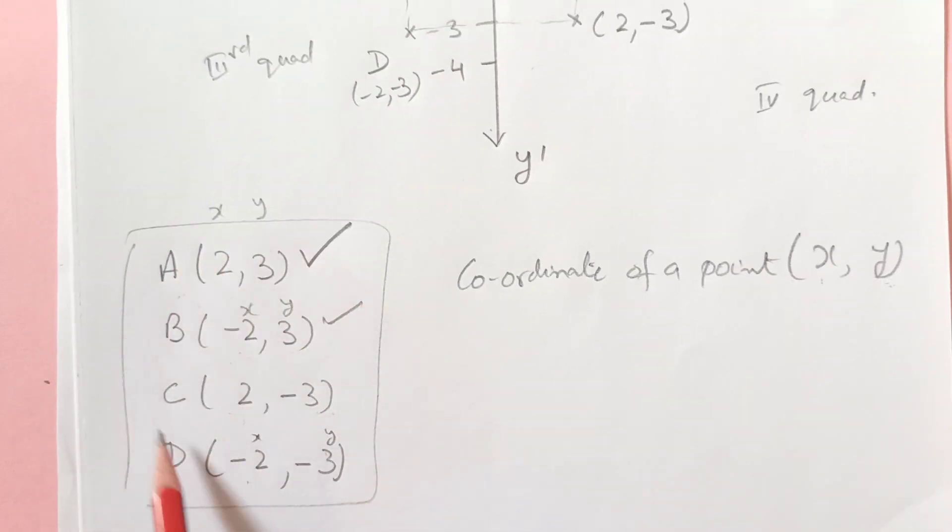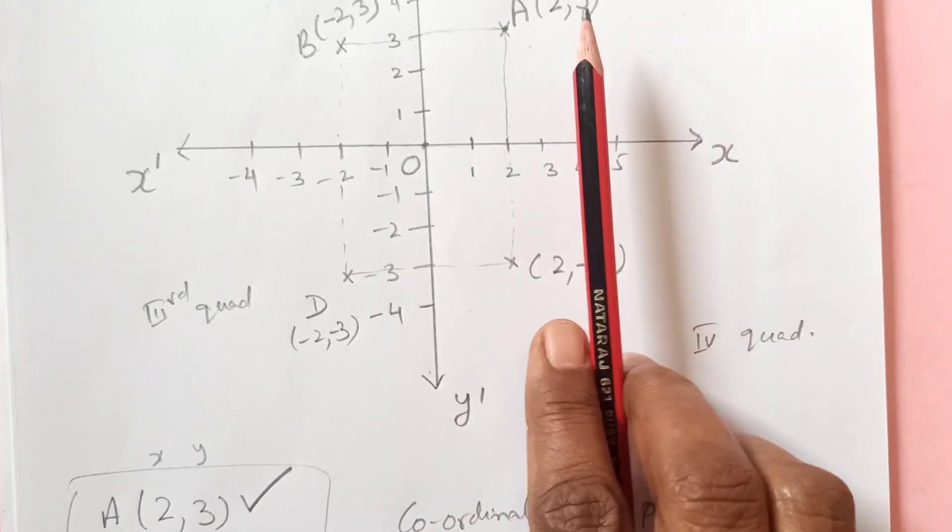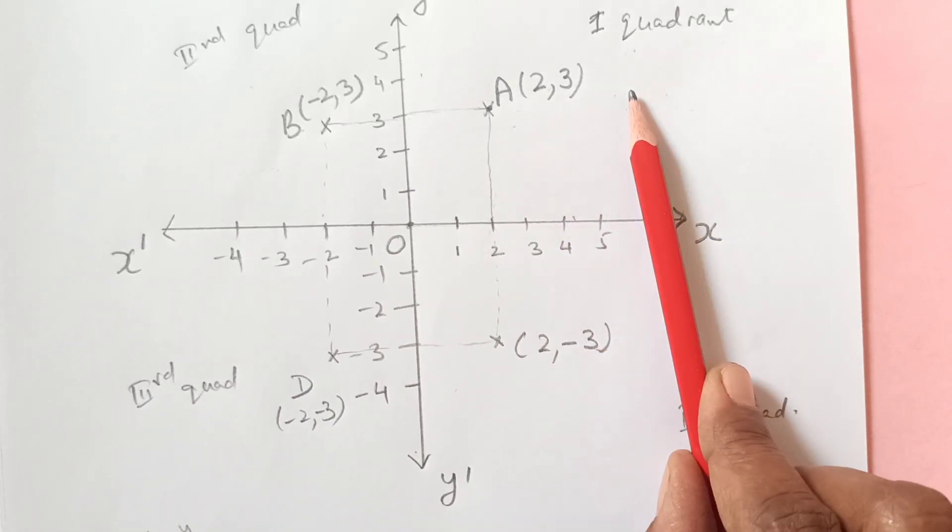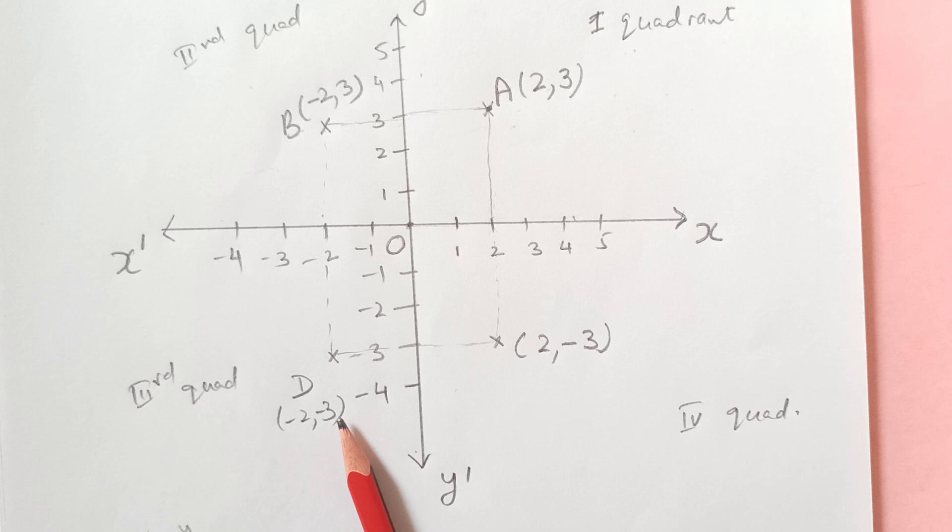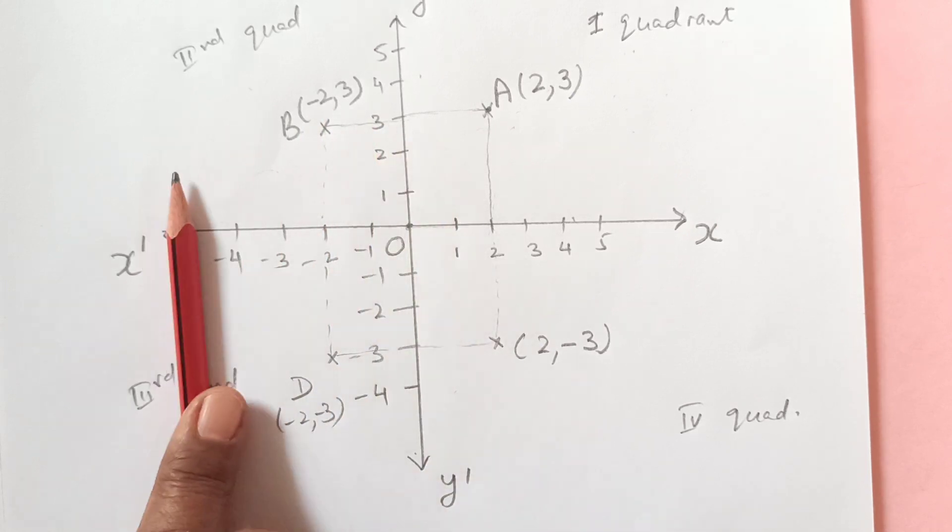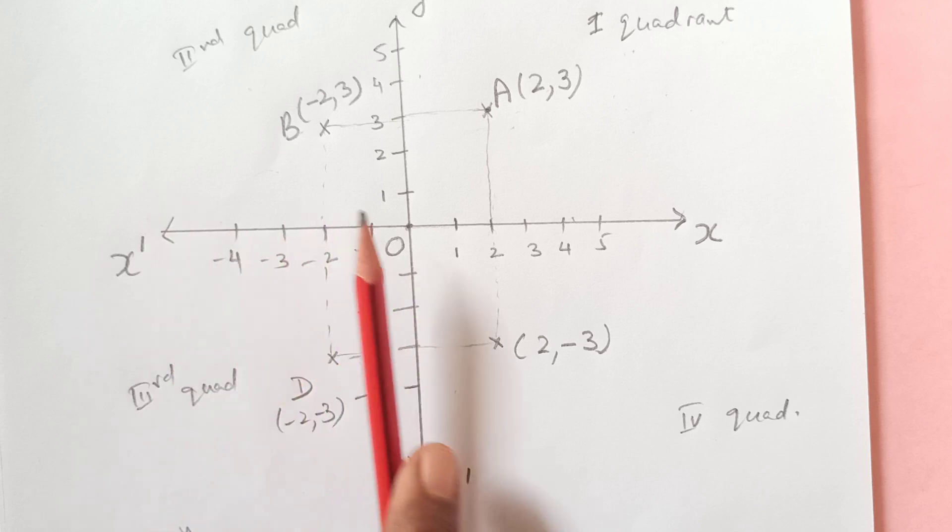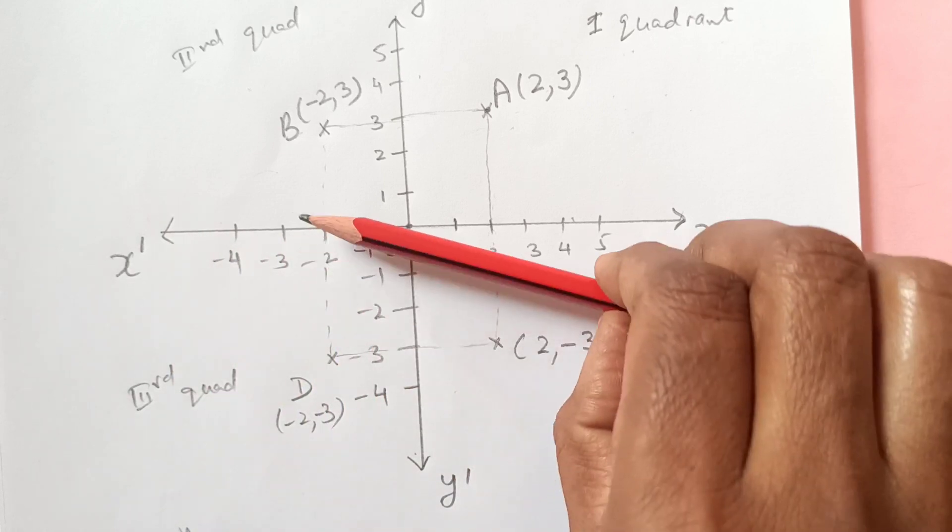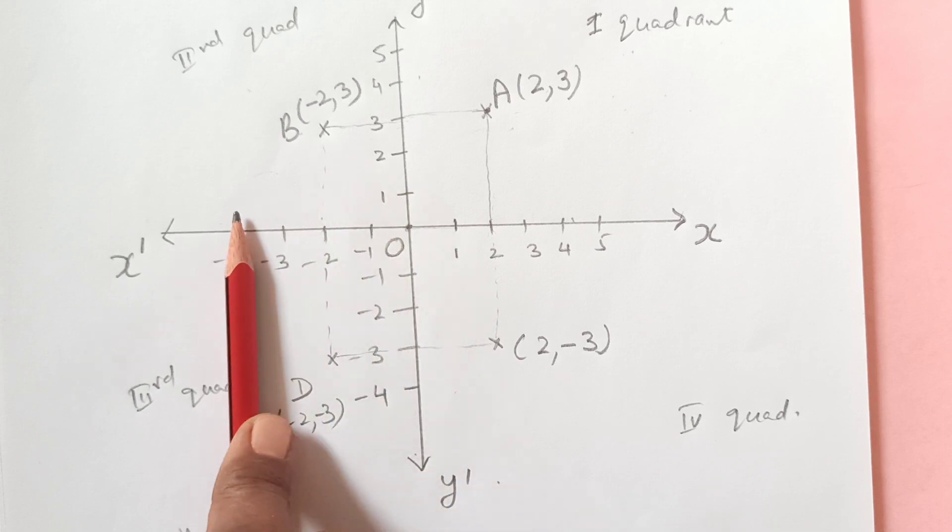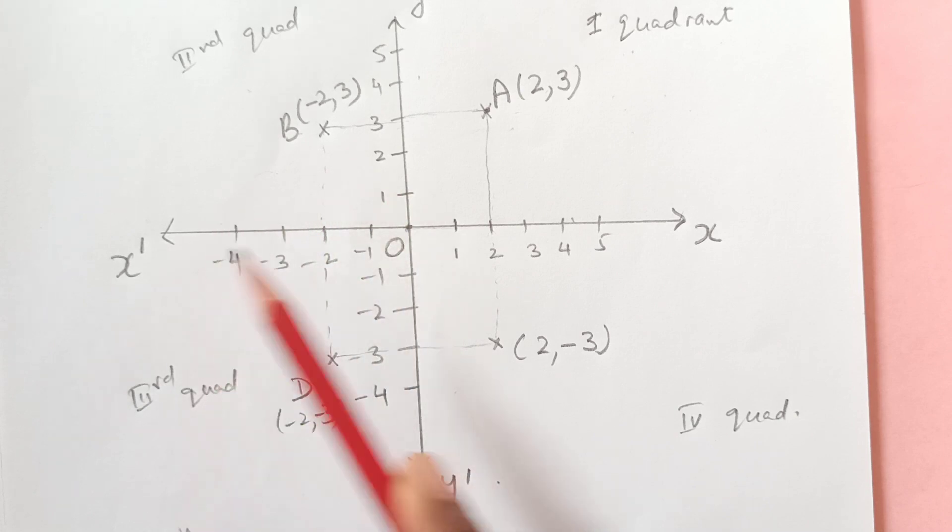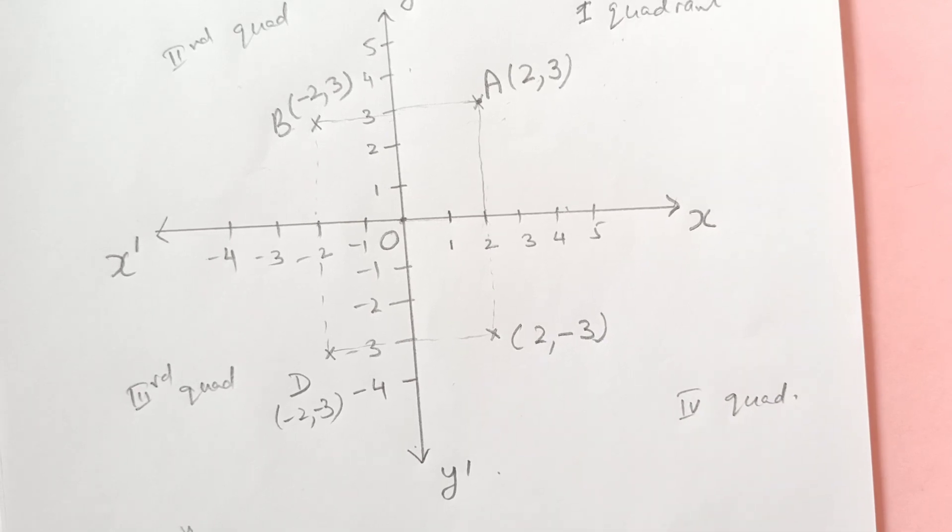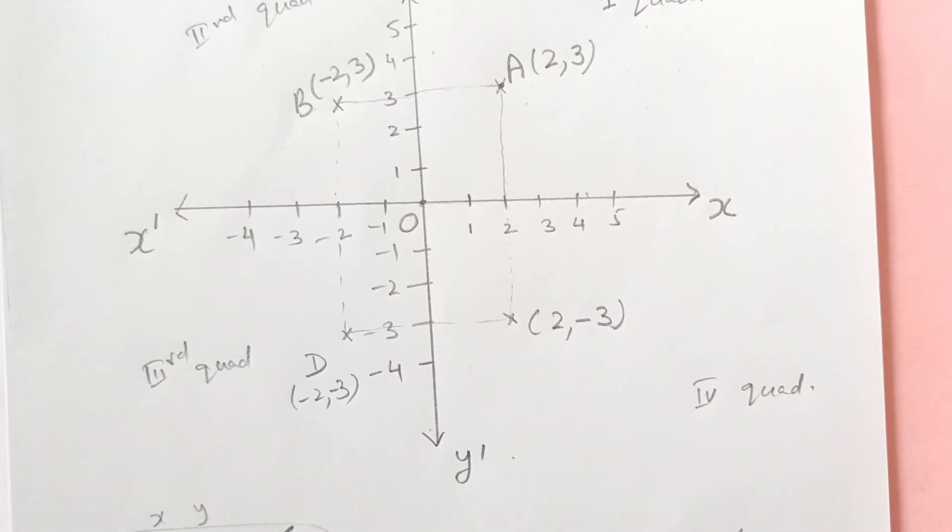So I have taken 4 different examples so that all the 4 points came in different quadrants. If both are positive it's first quadrant. If both are negative it's third quadrant. If x is negative it's going to be on the left of x axis and if y is negative it's going down over here.